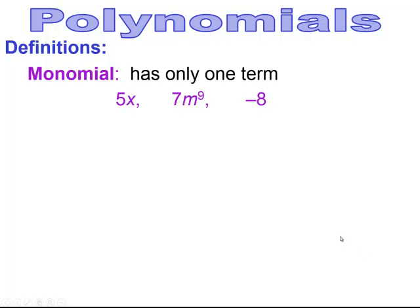Polynomials — definitions for polynomials. Our first definition is a monomial. A monomial has only one term. You see three examples here of a monomial: 5x, 7m to the 9th, or a simple constant like negative 8.